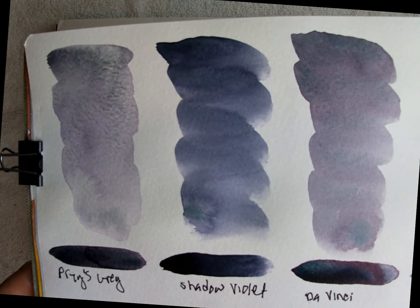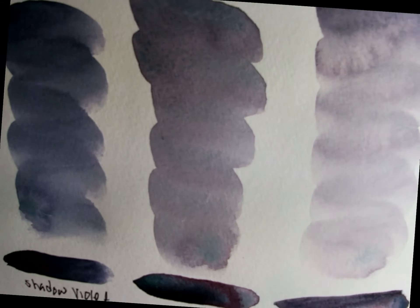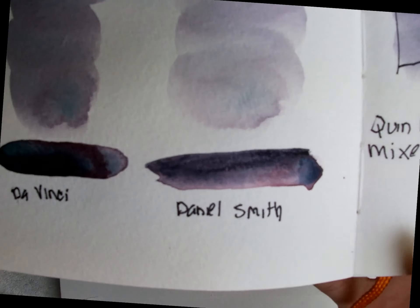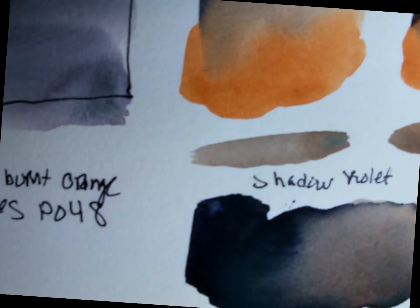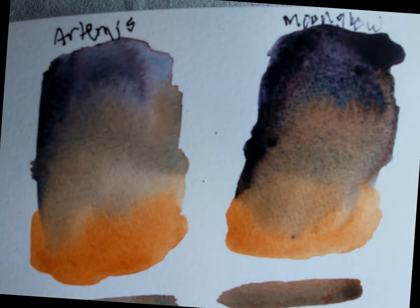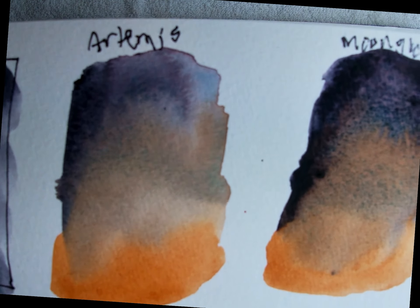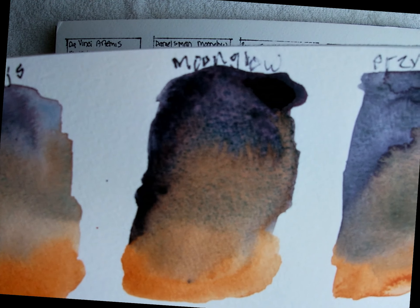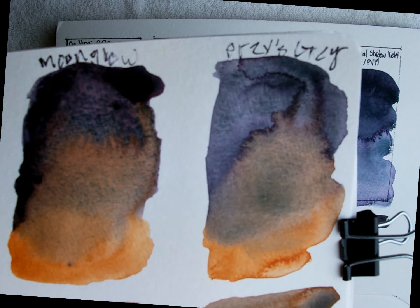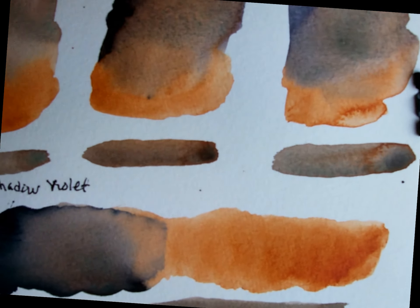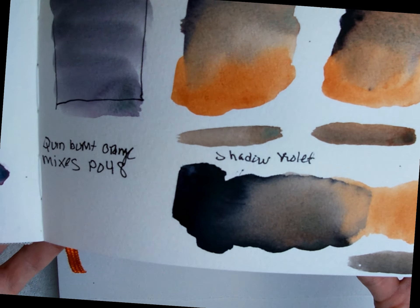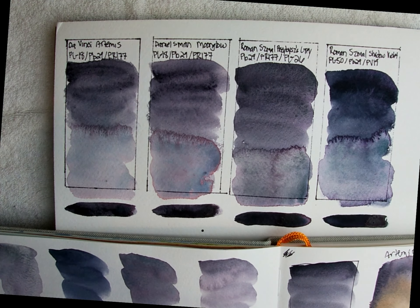And I went ahead and mixed these. First I'm gonna... I did this earlier. This is on a Global Arts Travelogue. And I went ahead with Quinburnt Orange because I had it in my palette. I just went ahead and mixed these. So this is Artemis, Moonglow, Pritsby's Gray, and then Shadow Violet.